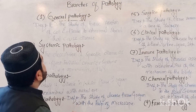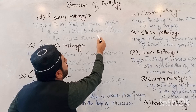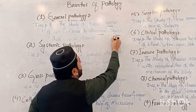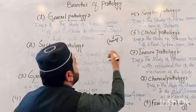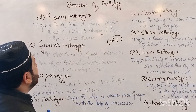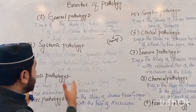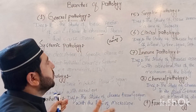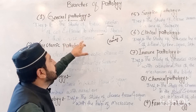General pathology is the study of the basic reaction of cells and tissues to abnormal stimuli that cause a disease. Every branch involves the study of how cells and tissues respond abnormally to pathological changes.